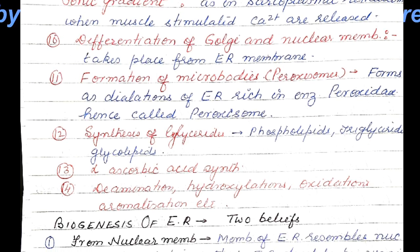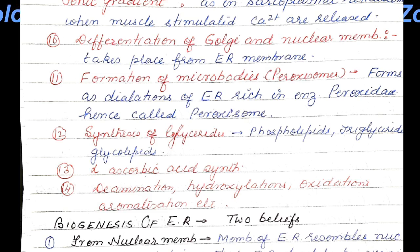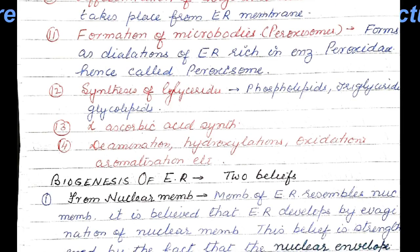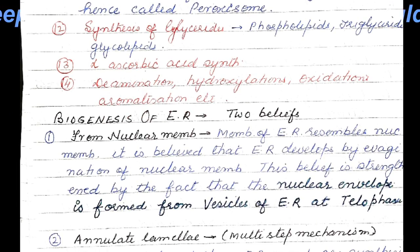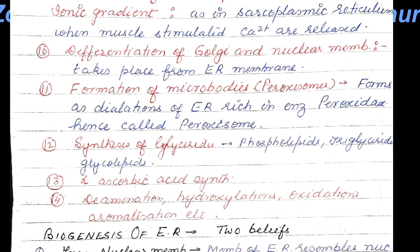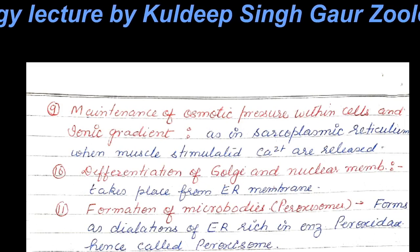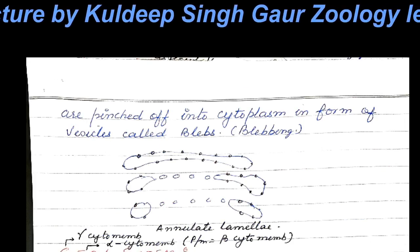Synthesis of glycerides, phospholipids, triglycerides, and glycolipids occurs in endoplasmic reticulum, along with reactions like deamination, hydroxylation, oxidations, and aromatization. Two theories were put forth for biogenesis of endoplasmic reticulum: one from nuclear membrane and another from annulate lamella.